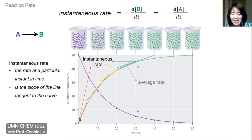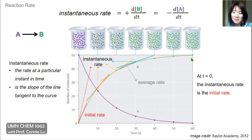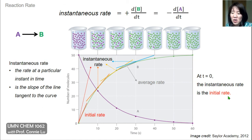Just like average rate, the instantaneous rate changes with respect to time. The red, orange, yellow, and blue lines shown here are all representative of instantaneous rates — they are all tangents to the curve at different time points. One special case is at t equals zero, shown by the red line. This instantaneous rate is called the initial rate because it happens at initial time.